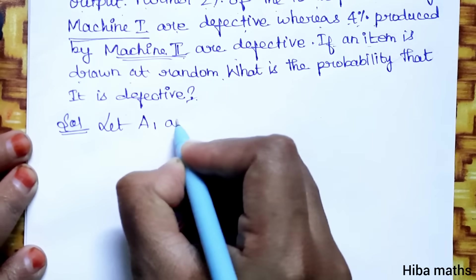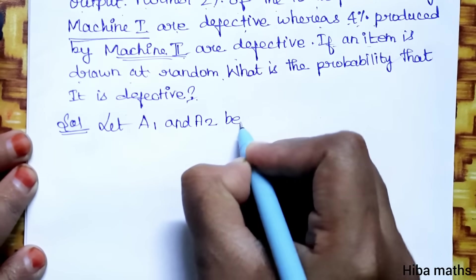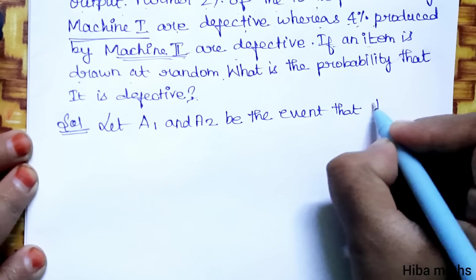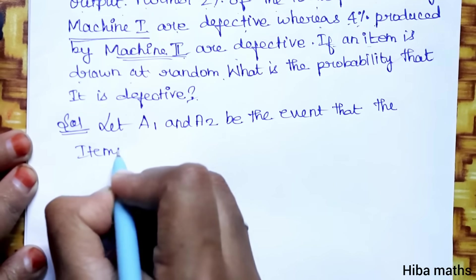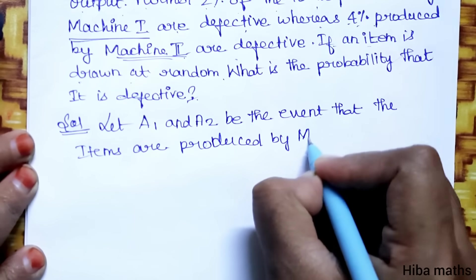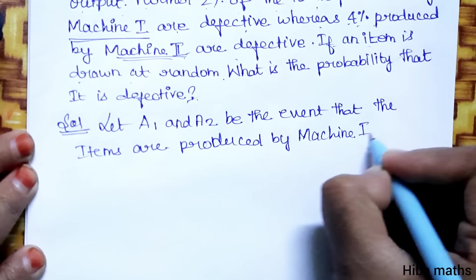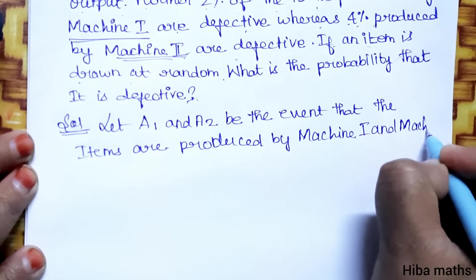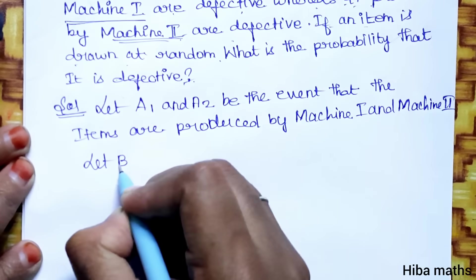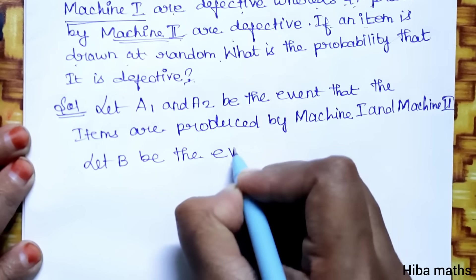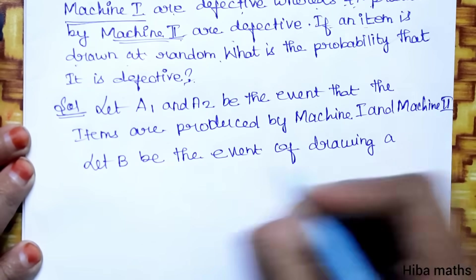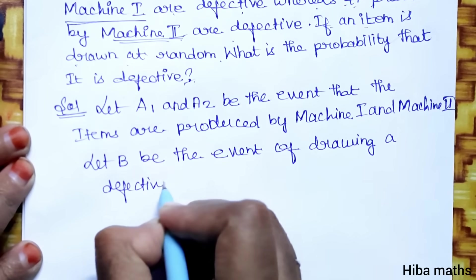Let A1 and A2 be the events that the items are produced by Machine 1 and Machine 2 respectively. Let B be the event of drawing a defective item.